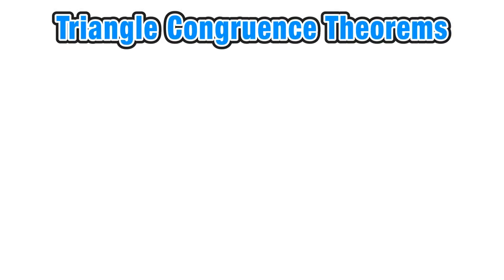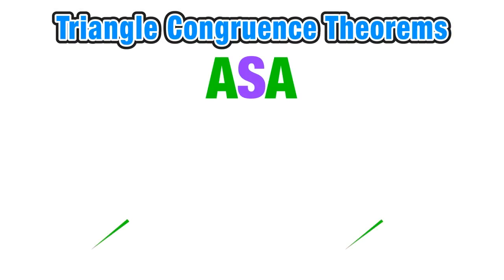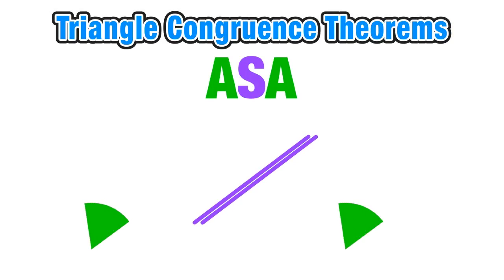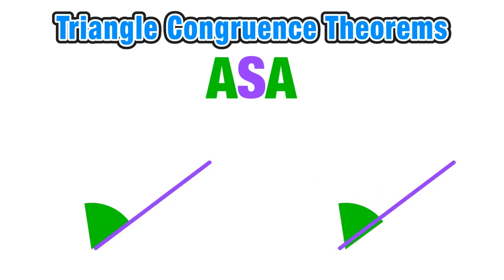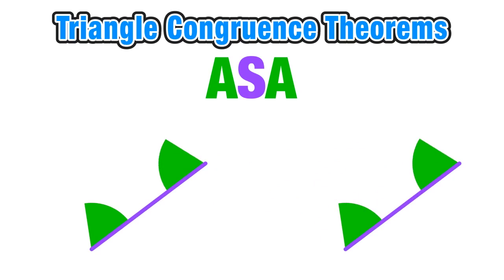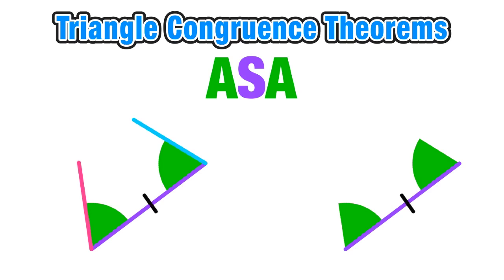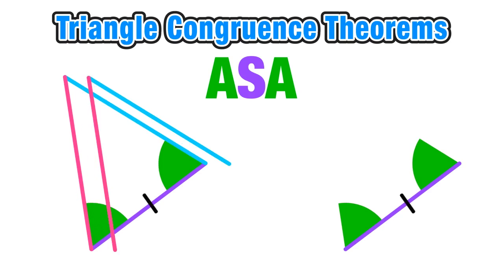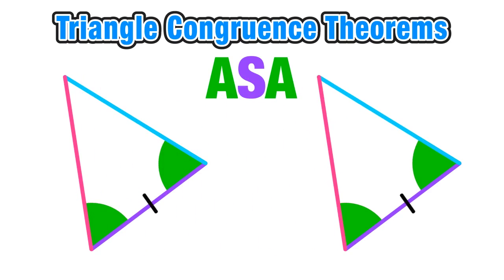We can start with a quick recap of the angle-side-angle theorem. If two triangles are congruent by angle-side-angle, then we have a congruent angle, a congruent side, and another congruent angle in both triangles. Notice that for angle-side-angle, the side is in between — in the middle of the two angles. By completing the triangle using those two angles, we can see why the angle-side-angle theorem proves that two triangles are congruent.